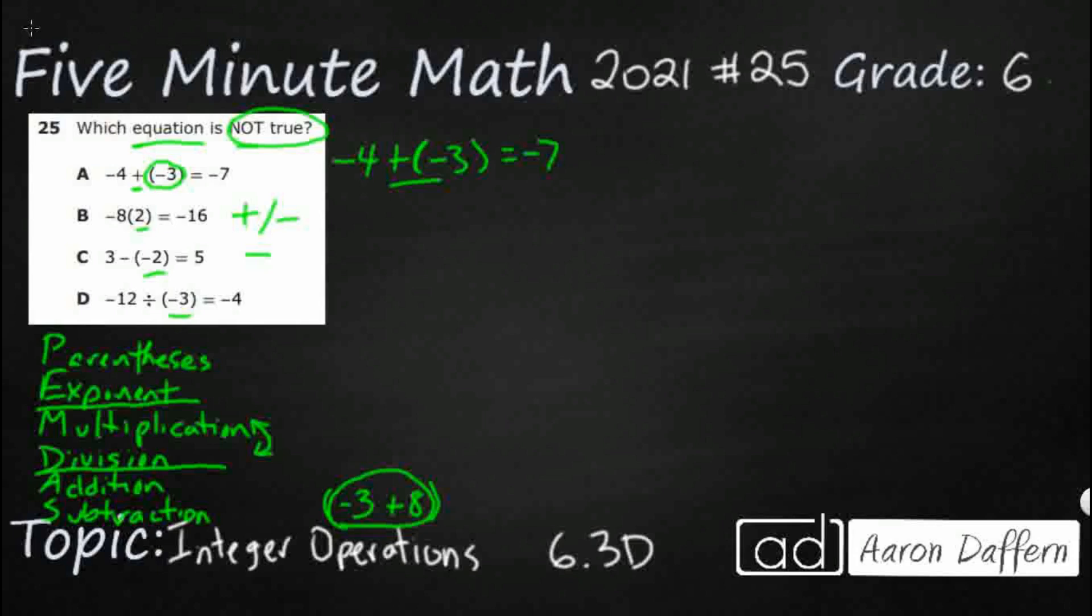And all this parentheses is doing is just keeping those separate. Because if you didn't have the parentheses, it's going to look like negative 4 plus minus 3. That looks kind of strange. So that's why we have the parentheses. So we do have a plus and a minus next to each other, and so that's just going to make a minus. So negative 4 minus 3 equals negative 7.